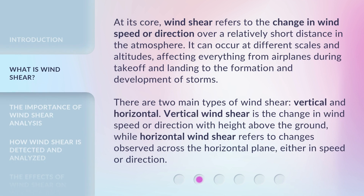At its core, windshear refers to the change in wind speed or direction over a relatively short distance in the atmosphere. It can occur at different scales and altitudes, affecting everything from airplanes during takeoff and landing to the formation and development of storms. There are two main types of windshear: vertical and horizontal. Vertical windshear is the change in wind speed or direction with height above the ground, while horizontal windshear refers to changes observed across the horizontal plane, either in speed or direction.